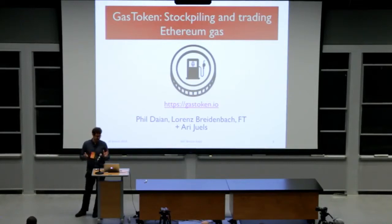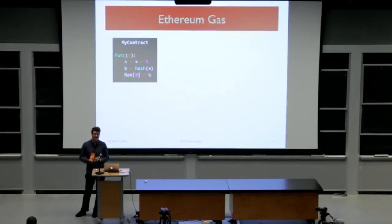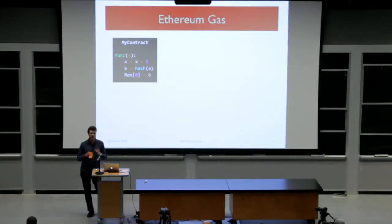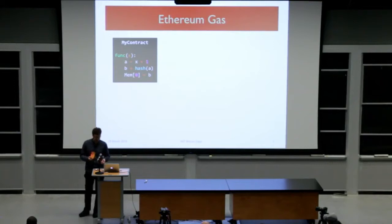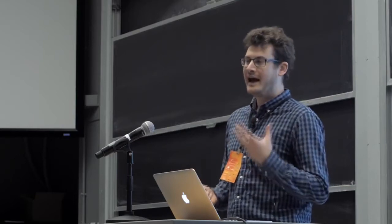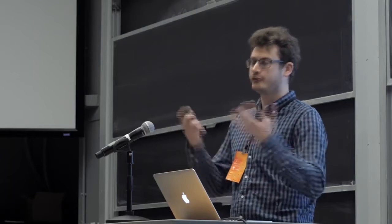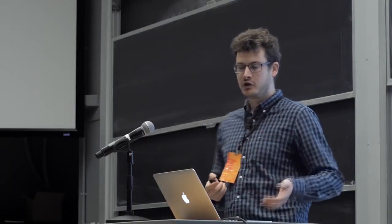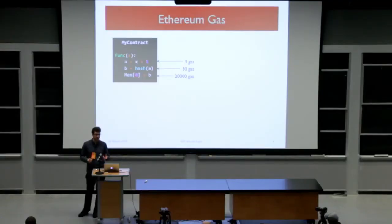Before I introduce what Gas Token does, let's have a quick primer on how gas works in Ethereum. Ethereum is a smart contract cryptocurrency. Say you have a simple contract - it takes a number, does some arithmetic, takes some hash, and stores it in long-term storage. The Ethereum platform decided that these various operations have a specific cost associated with them for miners and the network. The unit Ethereum uses is gas - one gas is one atomic unit of computation.